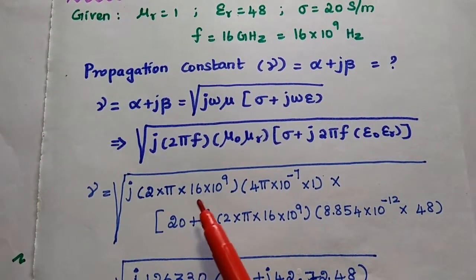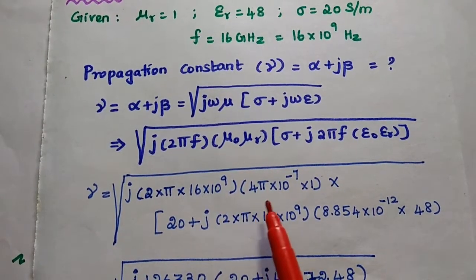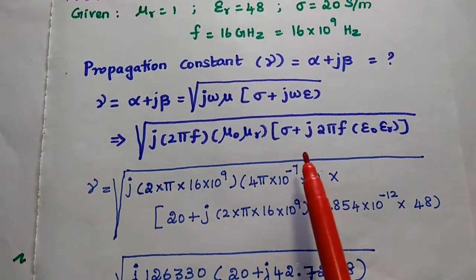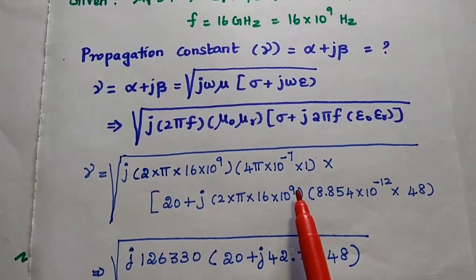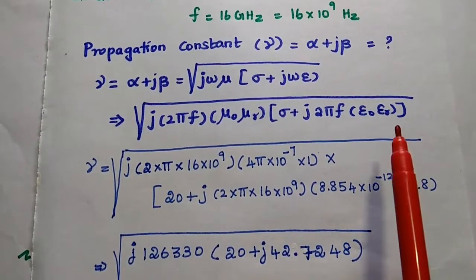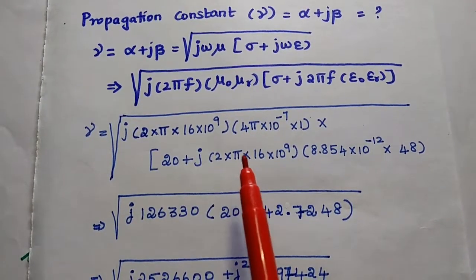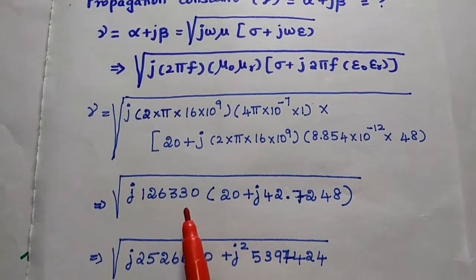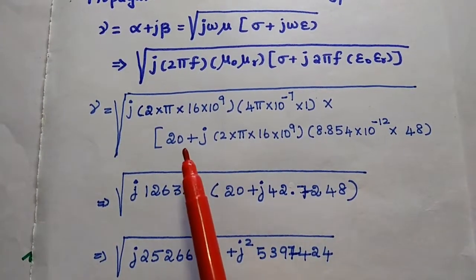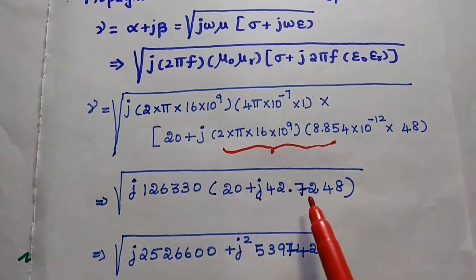We substitute the values: f is 16 into 10 to the power 9, mu naught is 4 pi into 10 to the power minus 7, mu r is 1, sigma is 20, plus j 2 pi f, epsilon naught is 8.854 into 10 to the power minus 12, and epsilon r is 48. Simplifying these terms using a calculator by multiplying all terms, we get j126330 for the first term, multiplied with 20, plus j42.7248 for the second term.